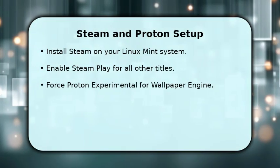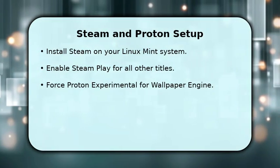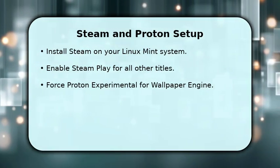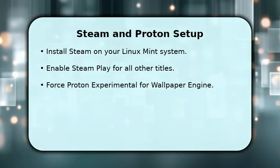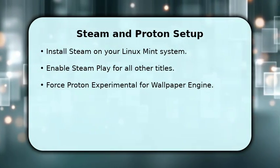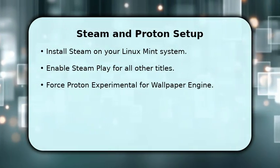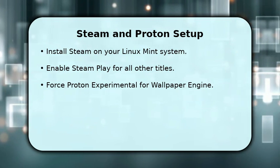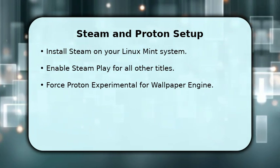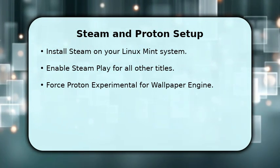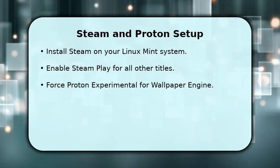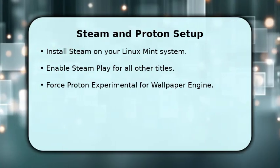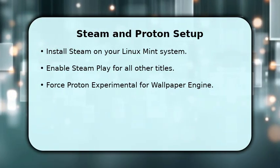First, you need to install Steam on your Linux Mint distribution. Once Steam is set up, navigate to its settings and enable Steam Play for all other titles. This crucial step allows you to run Windows applications.